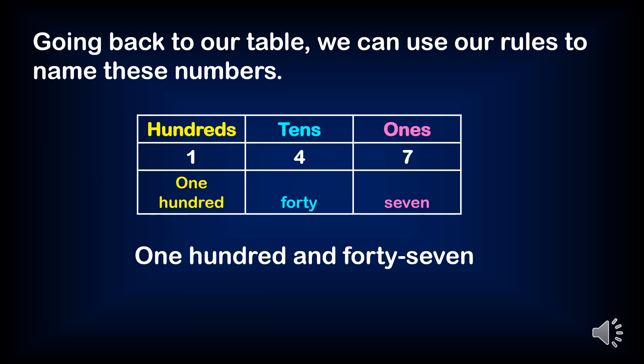Going back to our table, we can use our rules to name these numbers. 147: 7 is in 1's place, the value of 7. 4 is in 10's place, the value of 40. 1 is in the 100's place, the value is 100.